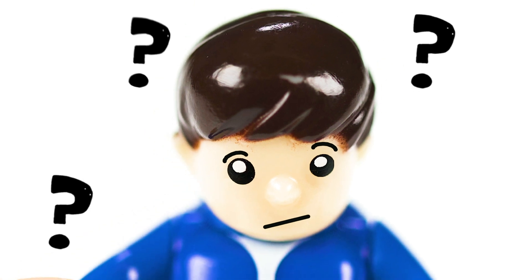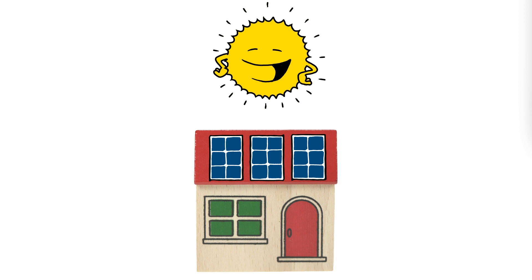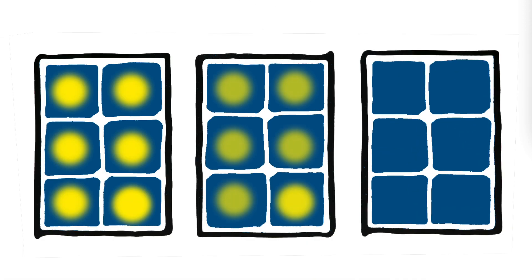But how does it work? The electrical current through the solar modules depends on the sunlight. Without shade, the current is high. In the shade, it is much lower.